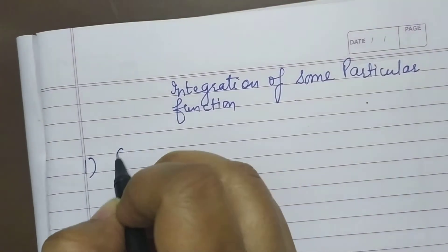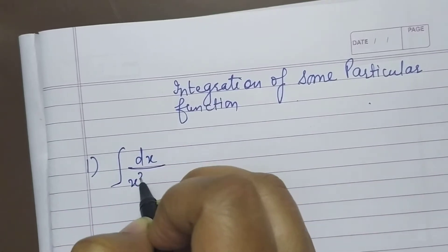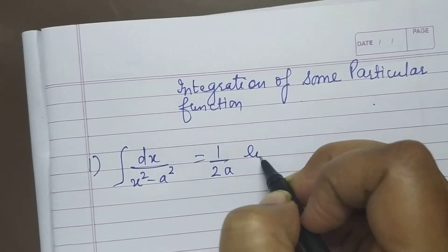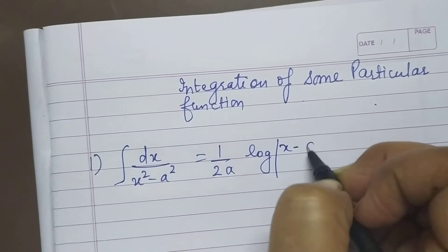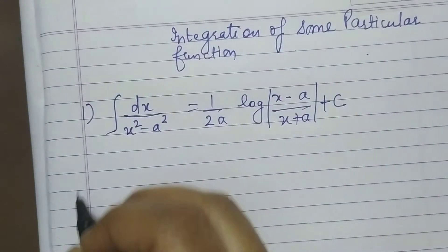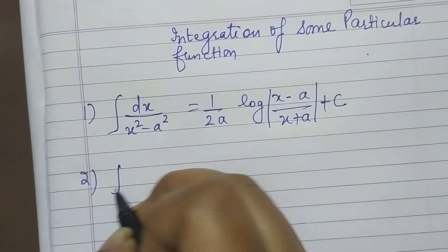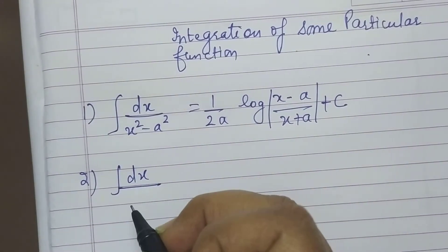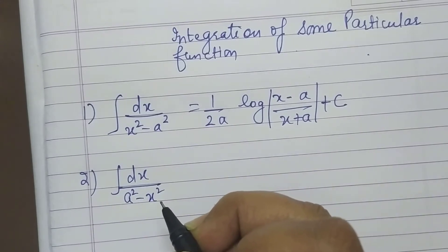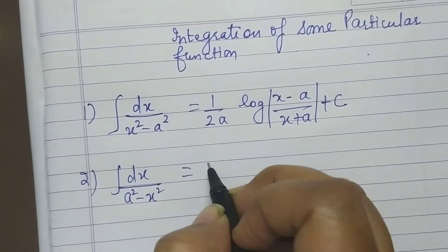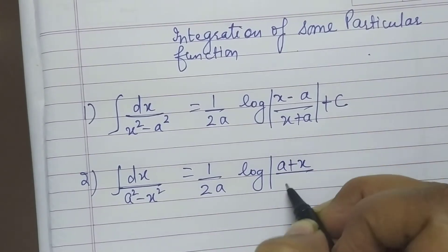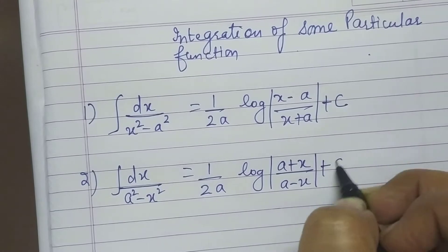First formula: integration of dx upon x² minus a² equals 1/(2a) · log|(x−a)/(x+a)| + c. Second formula: dx upon a² minus x² equals 1/(2a) · log|(a+x)/(a−x)| + c.